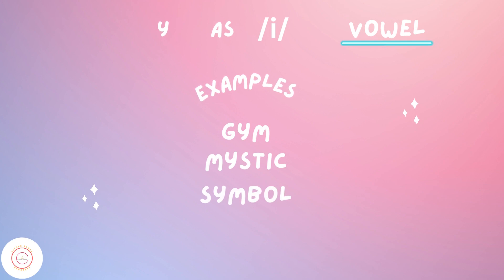Y says a short sound of letter I, that is IH, in the middle of a syllable or in the middle of a word. For example, gym. In the word gym, Y is saying the IH sound — G-I-M. Similarly, other examples can be mystic and symbol. In mystic, Y is in the middle of the first syllable, so it will say IH sound. Mystic. Similarly, in symbol, the letter Y is in the middle of a syllable, so it is saying the short IH sound. Symbol.